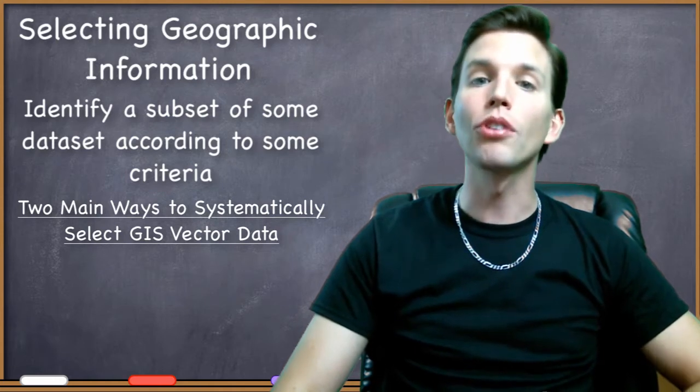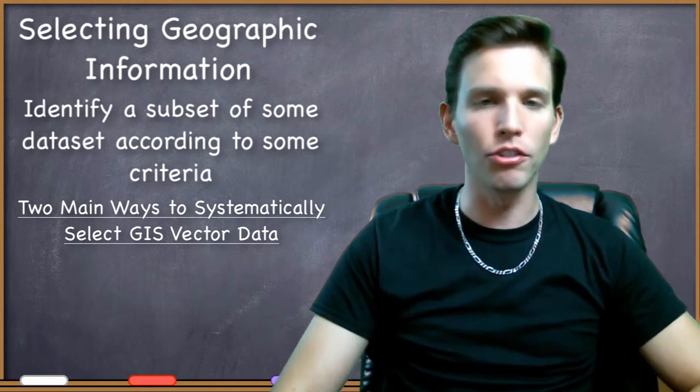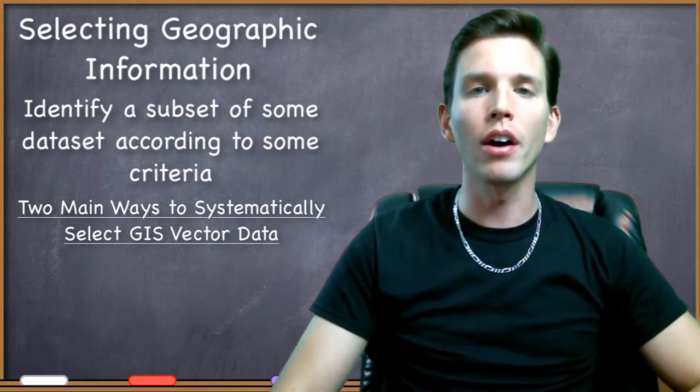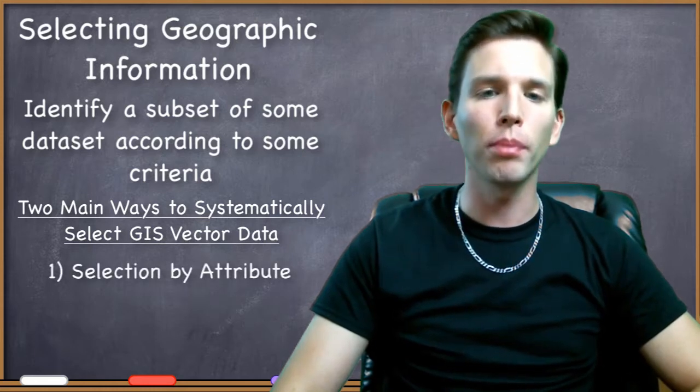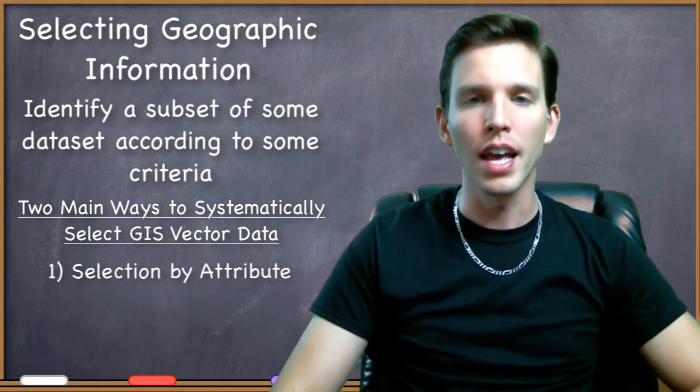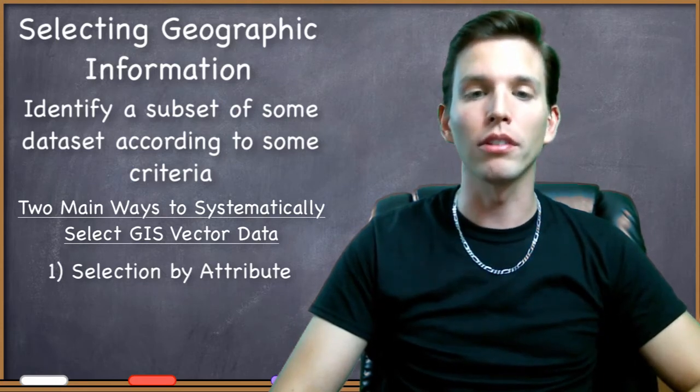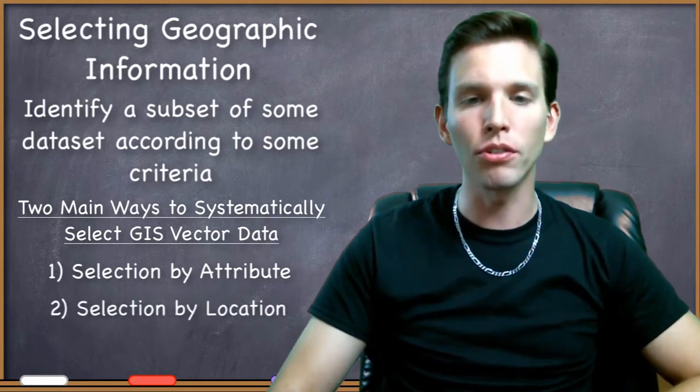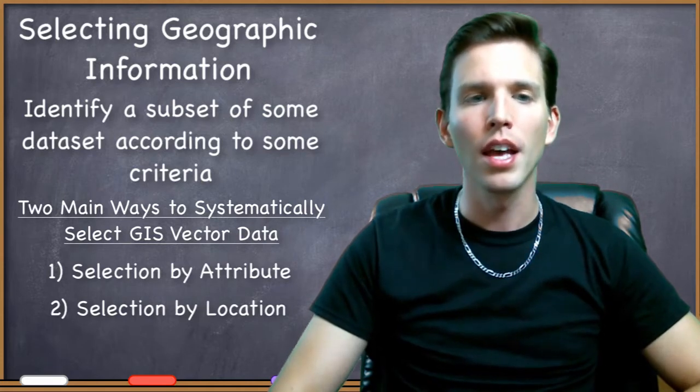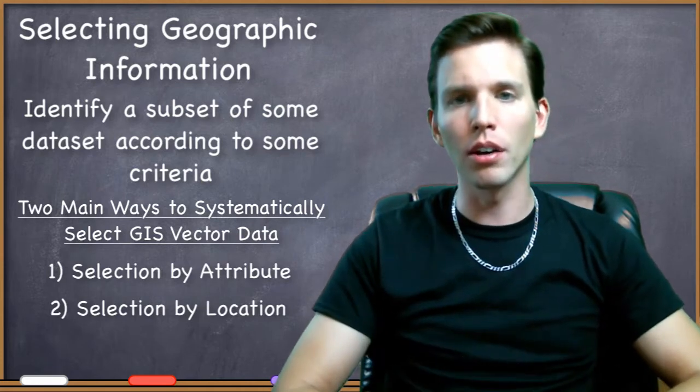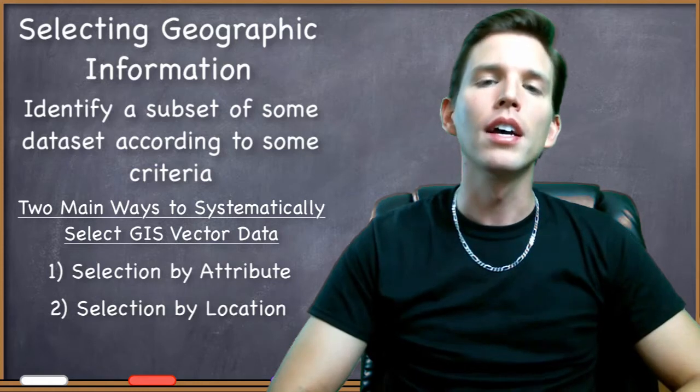One way to systematically select GIS data is based on the attributes, the aspatial characteristics of the data. The other way to systematically make a selection is to select the dataset based on the geometry or the spatial characteristics of the data.